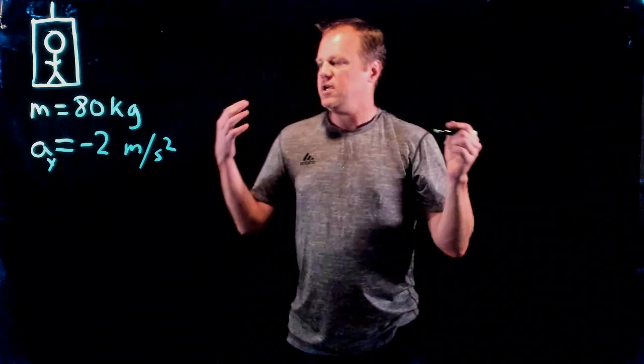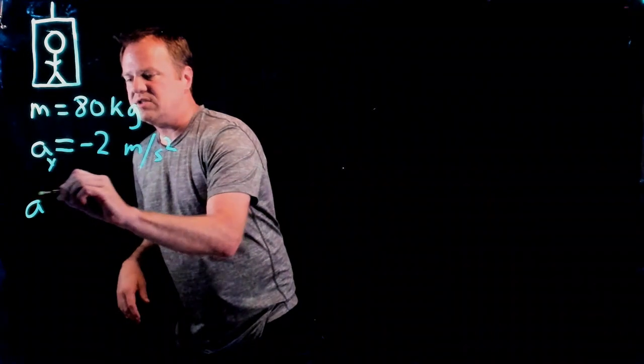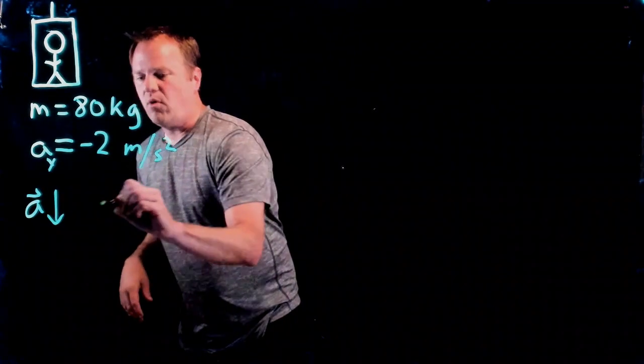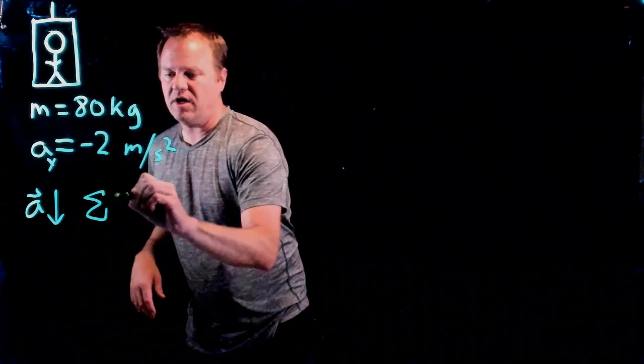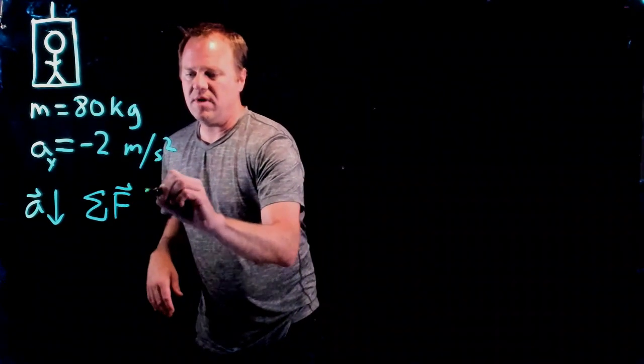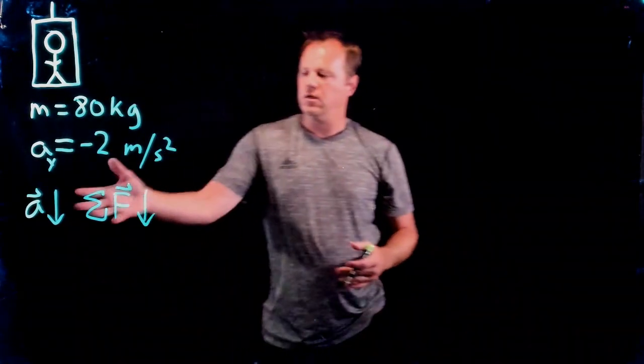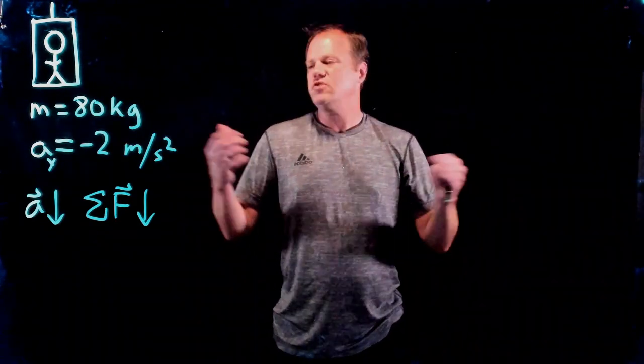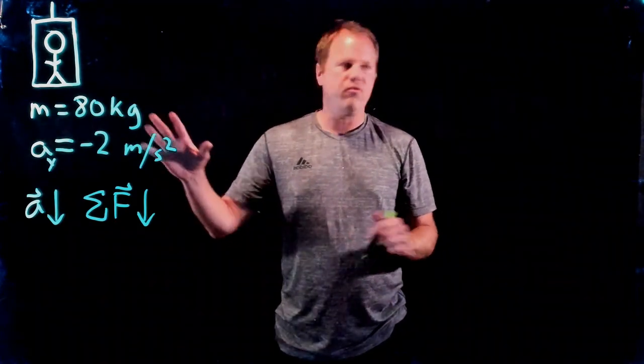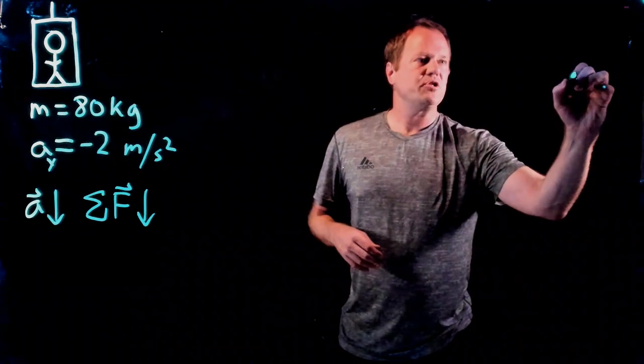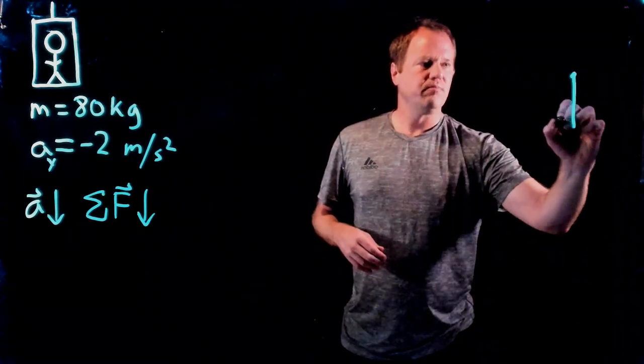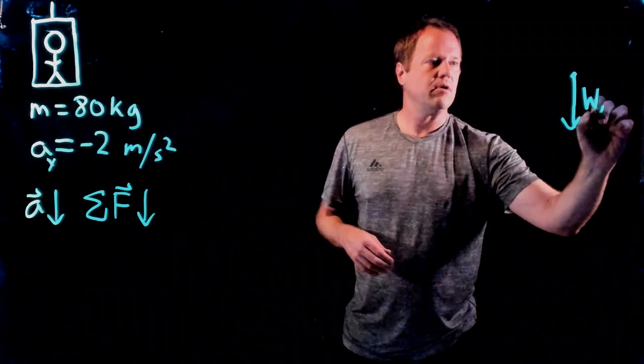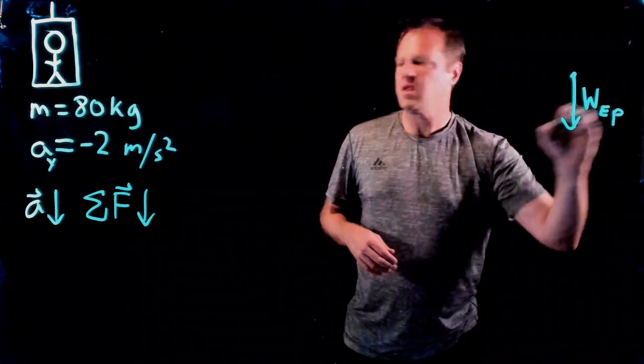The acceleration is down, which means that the net force when we add up the forces must also point down. This will help guide the free body diagram. The first force is the weight force—there is a weight force exerted by the earth on the person downward.